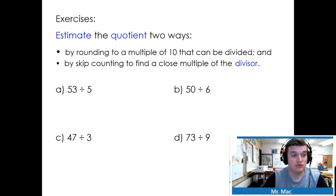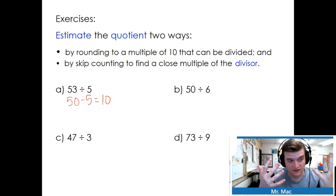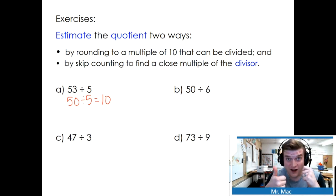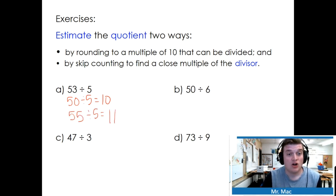Estimate the quotient two ways. By rounding to a multiple of 10 that can be divided, and by skip counting to finding the closest multiple of the divisor. 53 divided by 5. We can round 53 to 50 divided by 5, which gives us 10. But we can also skip count to find the closest multiple. 5, 10, 15, 20, 25, 30, 35, 40, 45, 50. But actually, is 50 the closest multiple? No, 55 is the closest multiple. 55 divided by 5 equals 11. We know our actual is going to be closer to 11 than 10. Try the next couple by yourself.